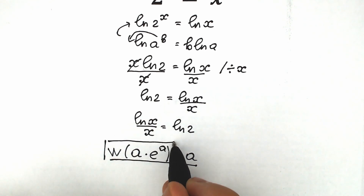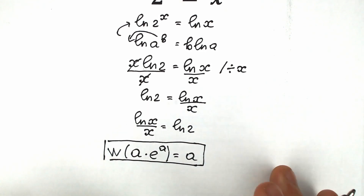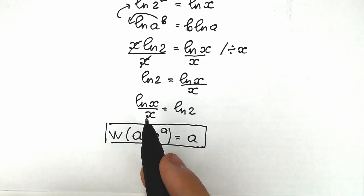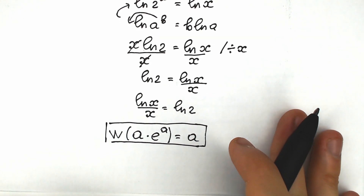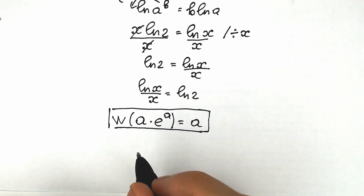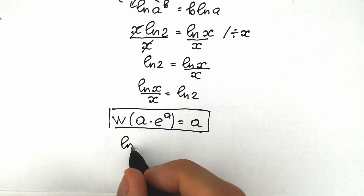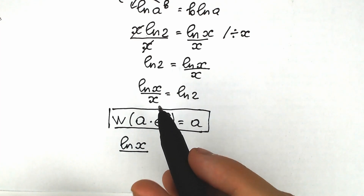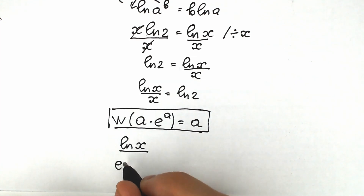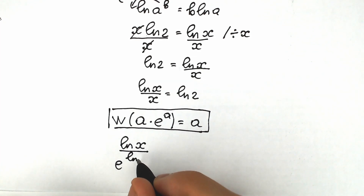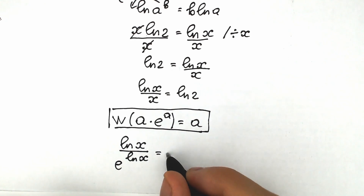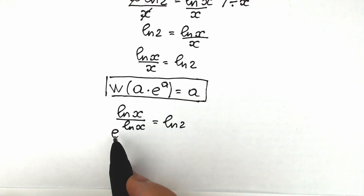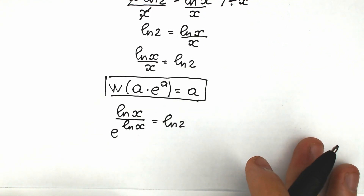Let's try to create an expression that looks like that on the left side. First of all, instead of x I want to write e to the power natural log x. So what we have right here is natural log x all over e to the power natural log x, equal to natural log 2. We just replace x with e to the power natural log x — nothing changes.